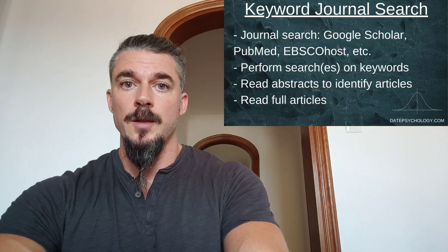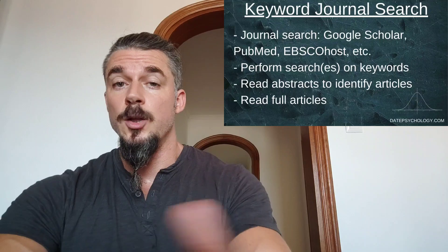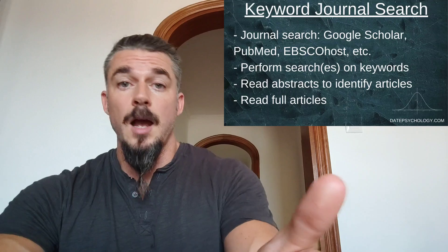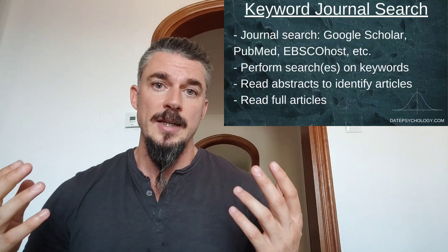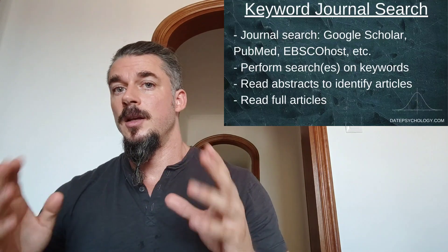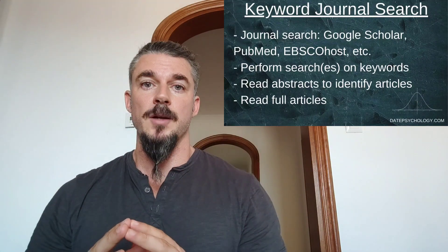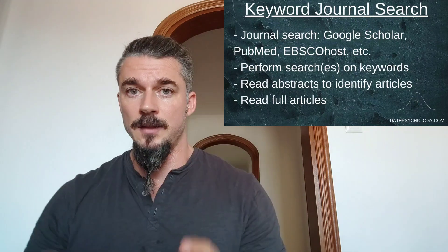Looking at the first step — this is your initial search. This is where you're going to go to a scholarly journal database. If you're in a university, it's going to be something like EBSCOhost. It might be PubMed. The open one would be Google Scholar, so anyone can go to Google Scholar. You'll take the keywords of the topic that you want to search.